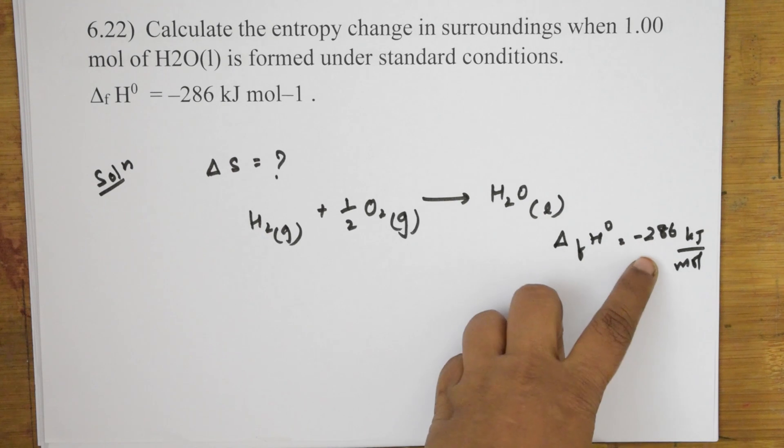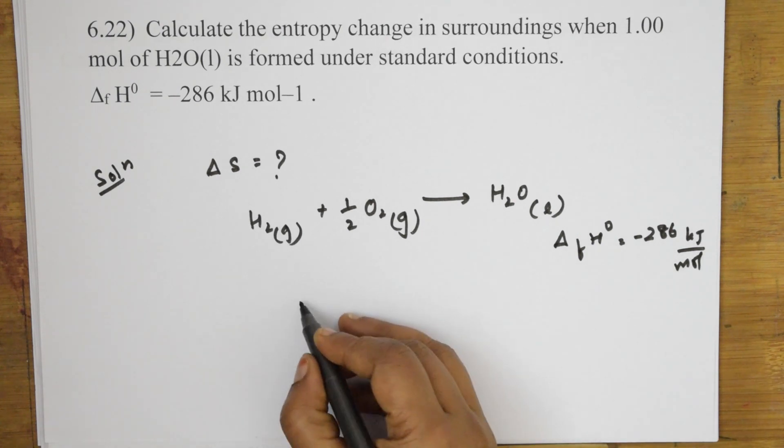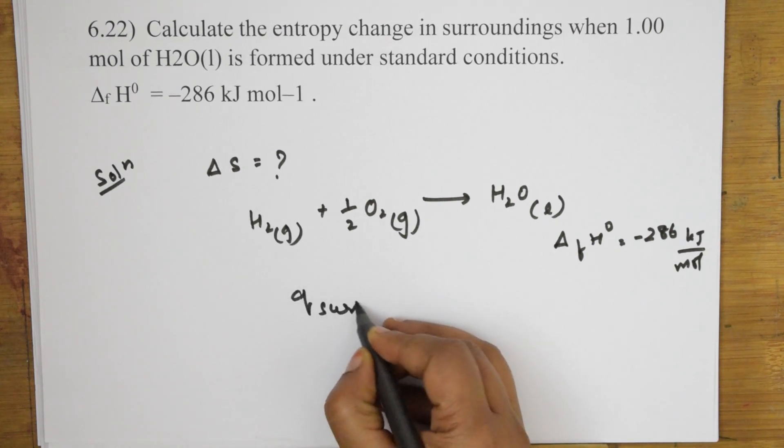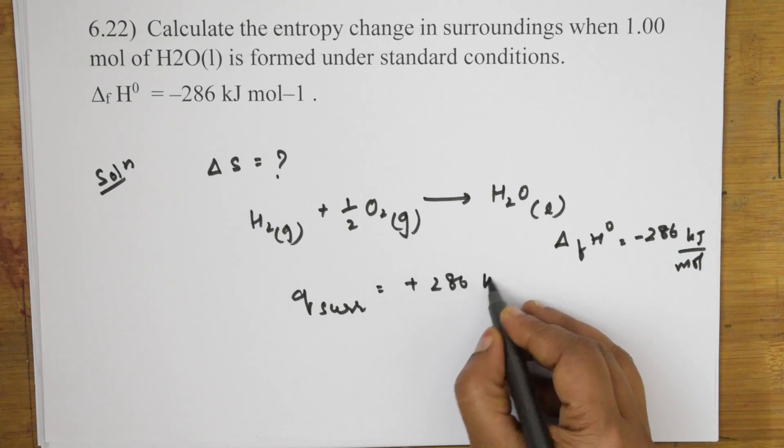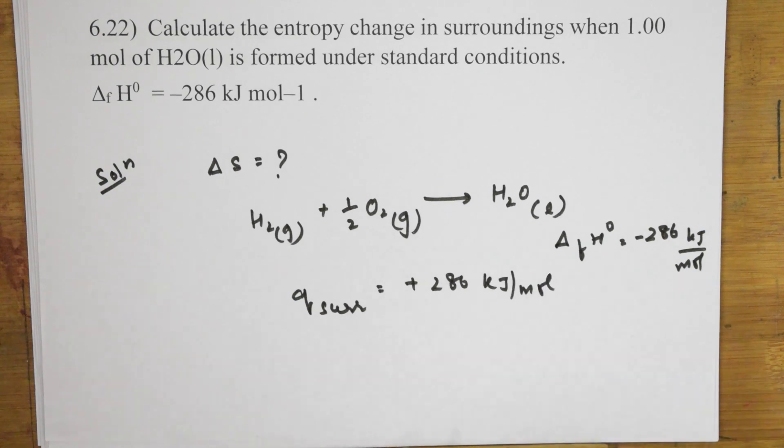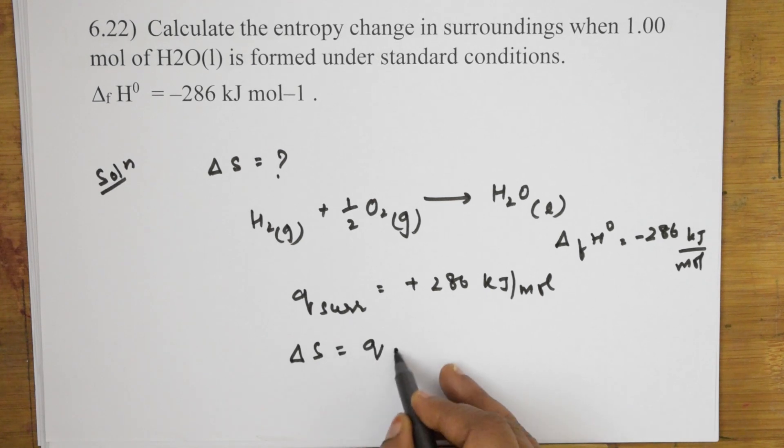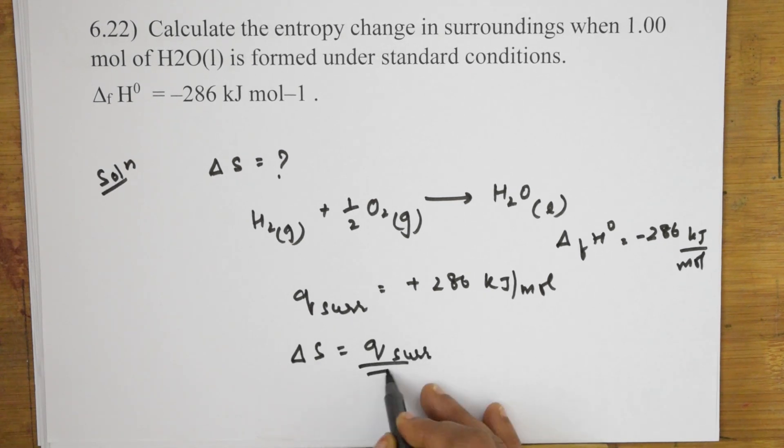Heat is evolved in the, evolve means released. It is released in the above reaction and what will happen? Once this is reached from the system, the surroundings are going to absorb this. That means, Q surroundings is positive. That is 286 positive, 286 kilo joules per mole. So, what is according to the formula? Delta S is equal to Q surrounding by T.